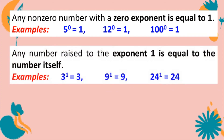Any number raised to the exponent 1 is equal to the number itself. This means that when the exponent is 1, the value is the same as the base. Examples: 3 to the first power equals 3, 9 to the first power equals 9, 24 to the first power equals 24.